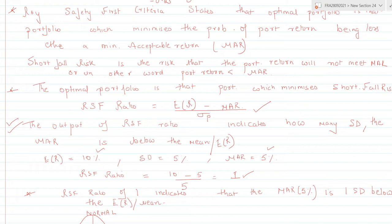So if the RSF ratio is 2, this means that the MAR is 2 standard deviations below the expected return of the portfolio. An RSF ratio of 2 indicates that the MAR is 2 SDs below the expected return.